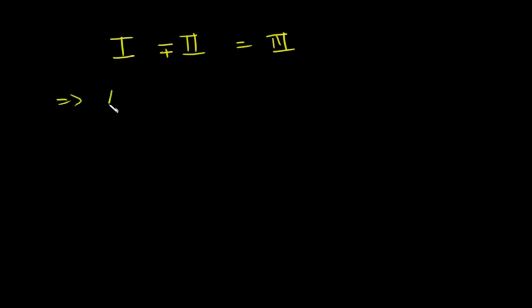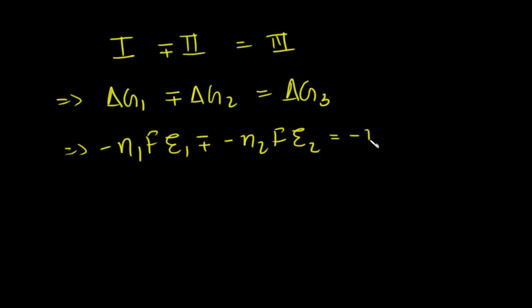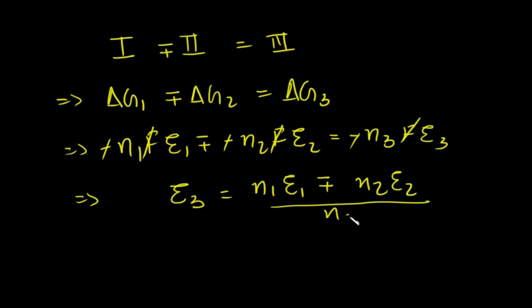We can always say if reaction 1 minus/plus reaction 2 equals reaction 3, that means ΔG₁ minus/plus ΔG₂ = ΔG₃. What that means is -n₁FE₁ minus/plus -n₂FE₂ = -n₃FE₃. You can get rid of F and minus, so I can say E₃ = (n₁E₁ minus/plus n₂E₂)/n₃, depending on whether you add or subtract reactions 1 and 2. Whatever linear combination you use for reactions 1 and 2, use the same linear combination for delta G.